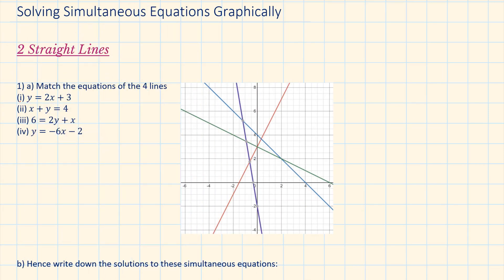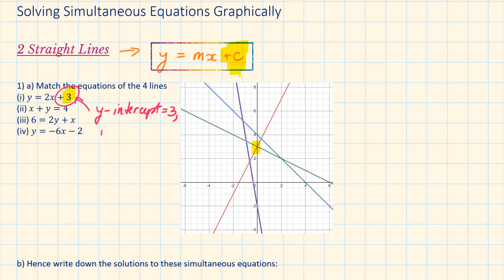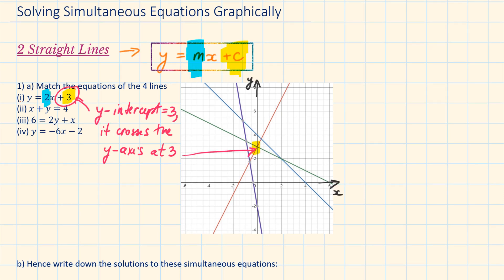Question 1: Match the equation of the 4 lines. Pause the video to try, and when you're done, come back to check the answers. At any point throughout this video, if you have any questions, post it in the comment below and I'll help you. We need to be familiar with the general form of an equation of a straight line, y equals mx plus c, where c is the y-intercept and m is the gradient.